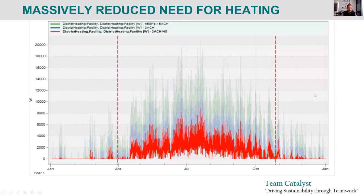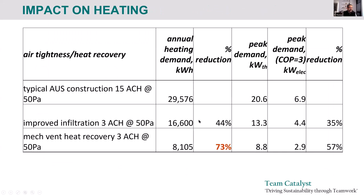A heat recovery ventilator supplies fresh outside air to bedrooms and living rooms while extracting polluted, moisture-laden air from bathrooms, toilets, and kitchens. The magic box exchanges the heat: in winter, cold incoming air passes the heat exchanger and picks up heat from the exhausted air. Adding heat recovery reduces the peak heating load further, from 13 kW down to about 9 kW. In summary, for heating energy in Sydney, we eliminated about three-quarters of the heating requirement — reducing electrical capacity needed from about 7 kW down to 3 kW.